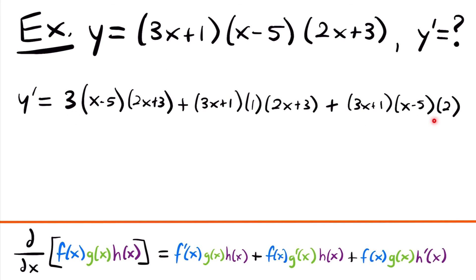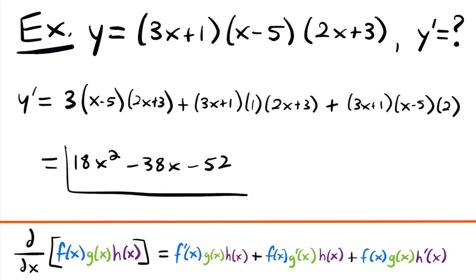That is the derivative of this function. You could go through and simplify by distributing and expanding — there's a lot of work to be done. But if you're just asked to find a derivative, you can keep it in that form. If you are interested, this simplifies to 18x squared minus 38x minus 52. Both forms are acceptable answers for the derivative using the product rule.